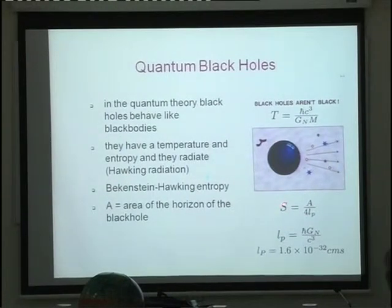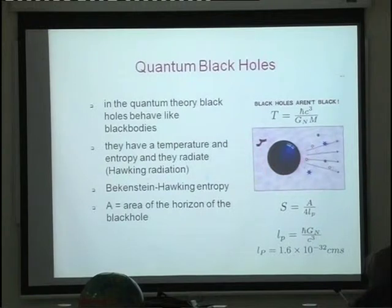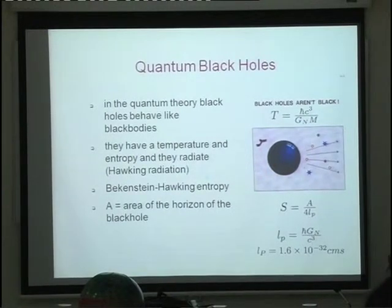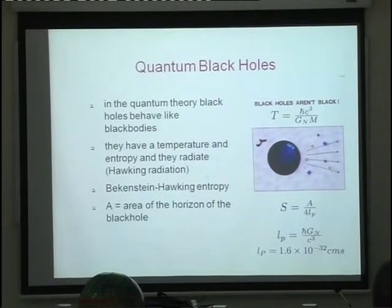There is a very famous formula for the entropy of a black hole, given simply by the area of the horizon — the surface which separates the inside and outside of the black hole. So if you are inside, light cannot come outside.